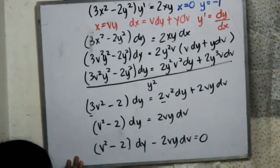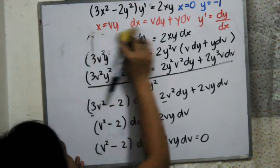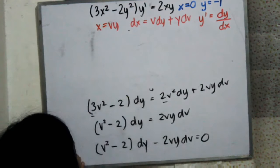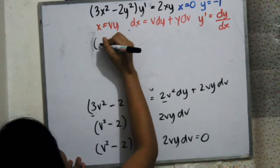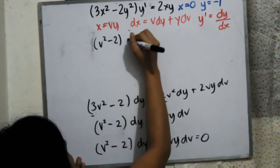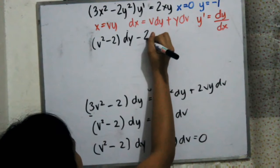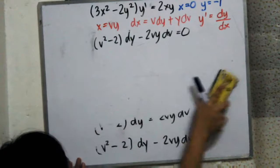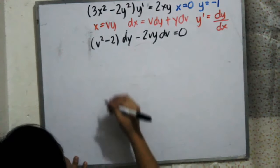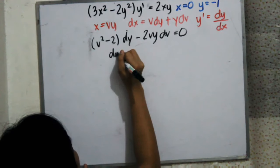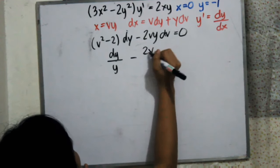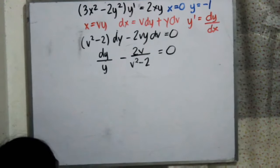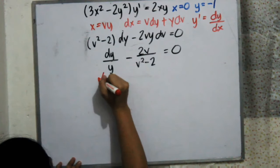We separate the variables to arrive at dy over y equals negative 2v all over v squared minus 2. Rearranging, we have dy over y minus 2v over v squared minus 2 all equal to 0. Now we simply integrate both sides.